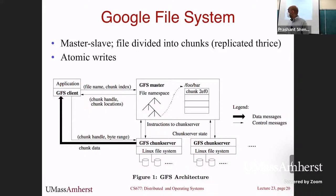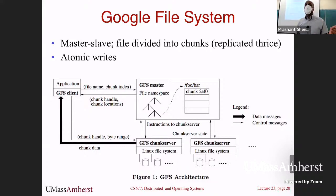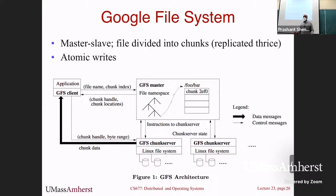A client wants to access a file. First, that request goes to the master — the metadata server — and says where is this file stored? It looks up the file and returns where the block is stored. You'll look up your metadata and find it's on one of three nodes, then go to one of those nodes and retrieve the file.